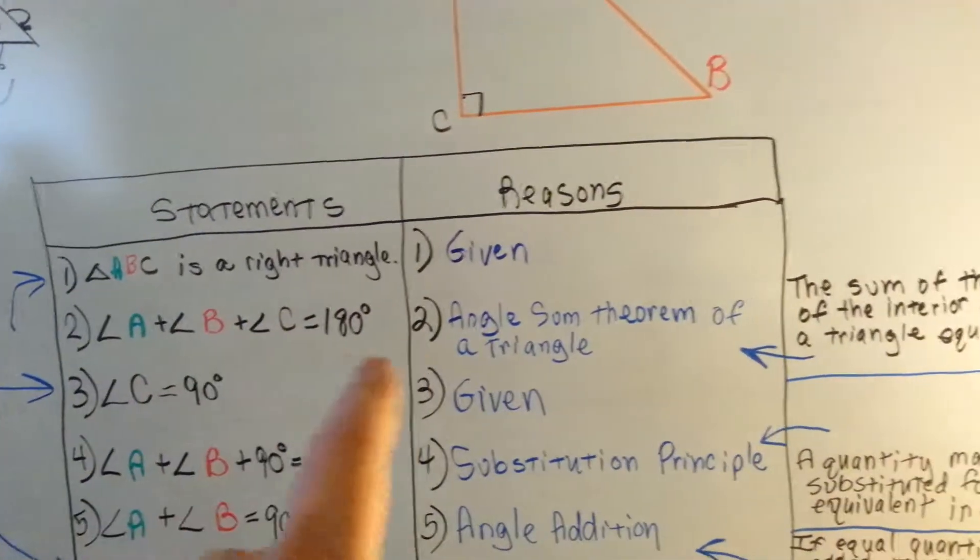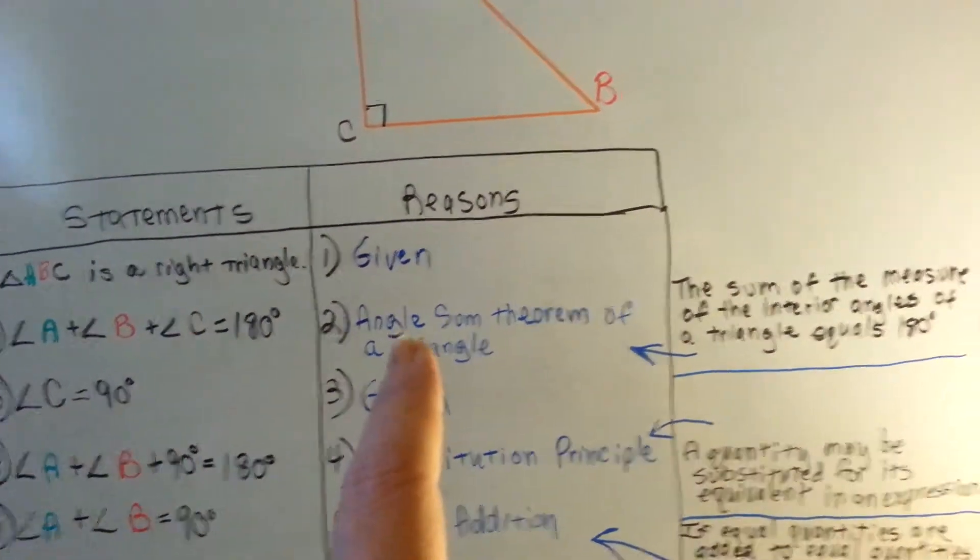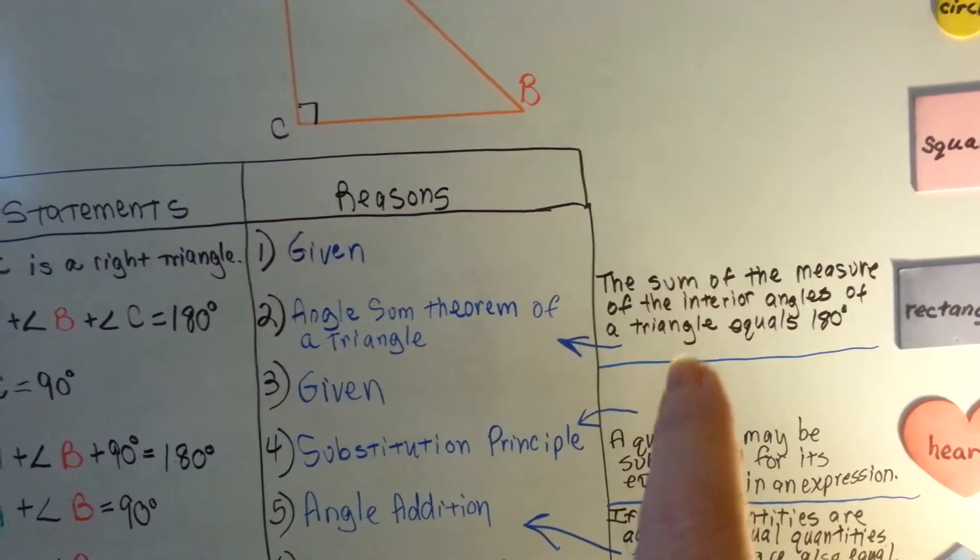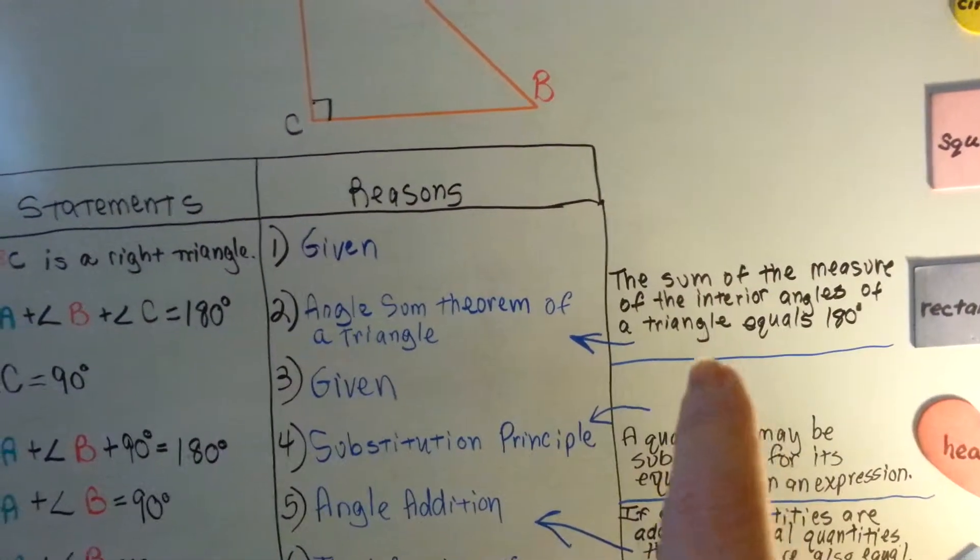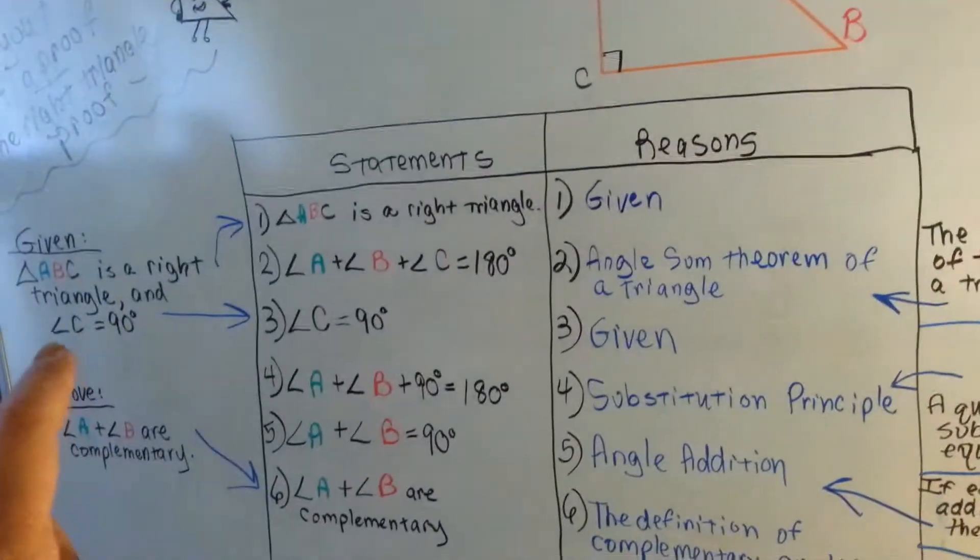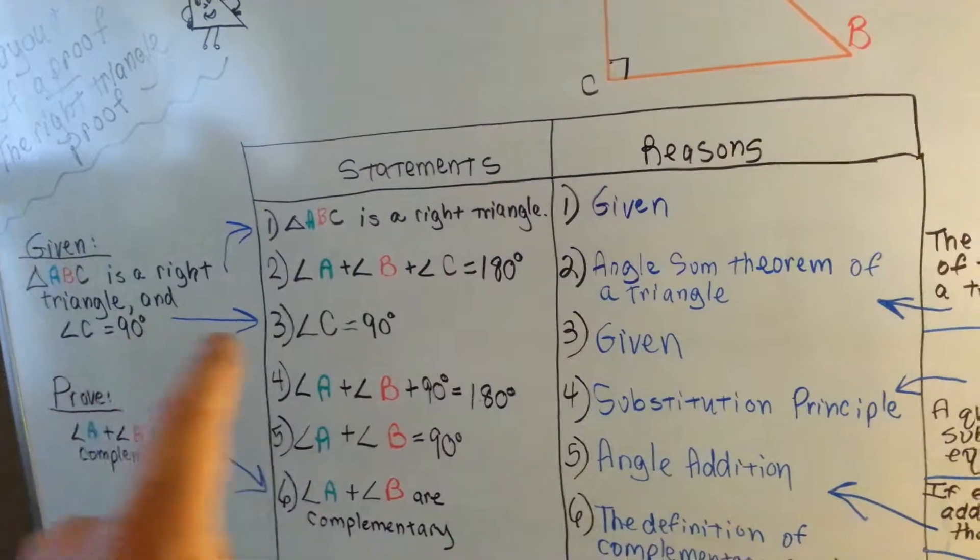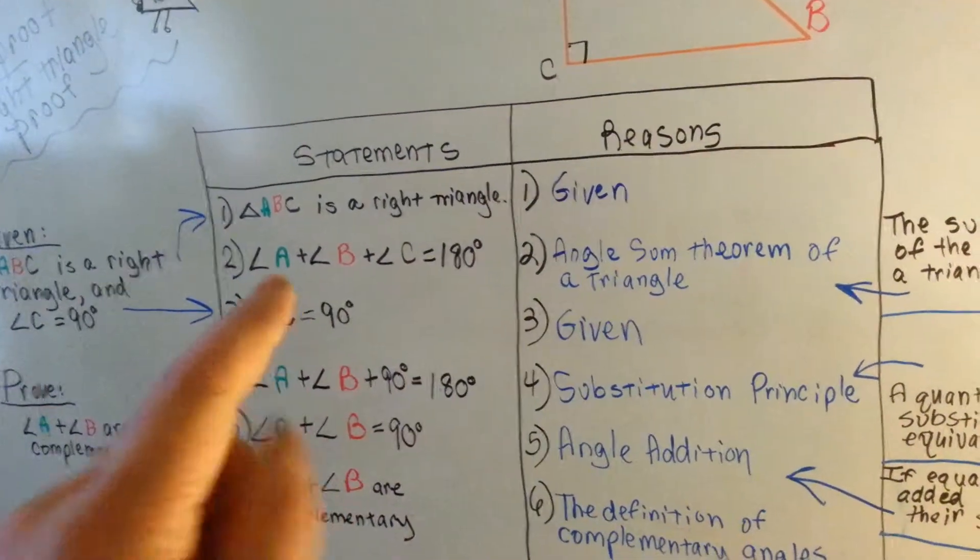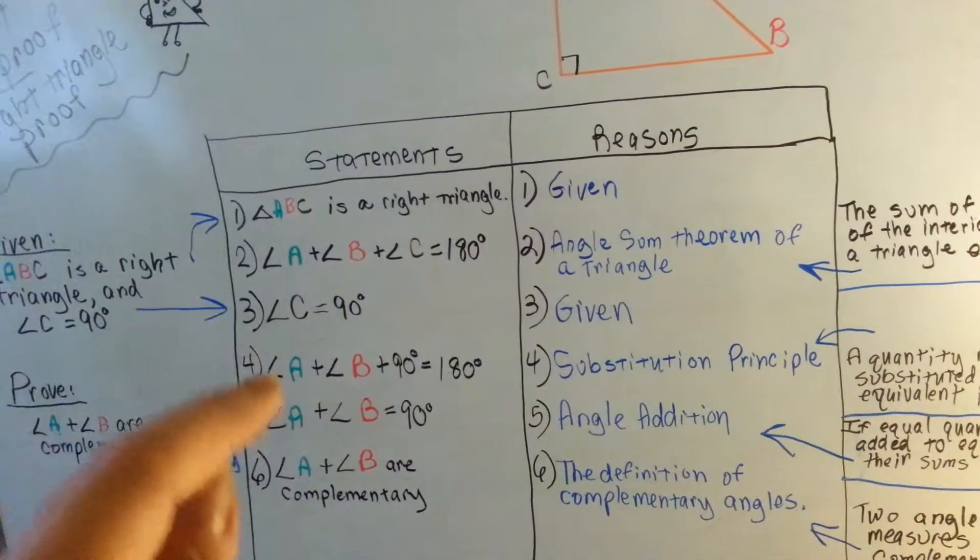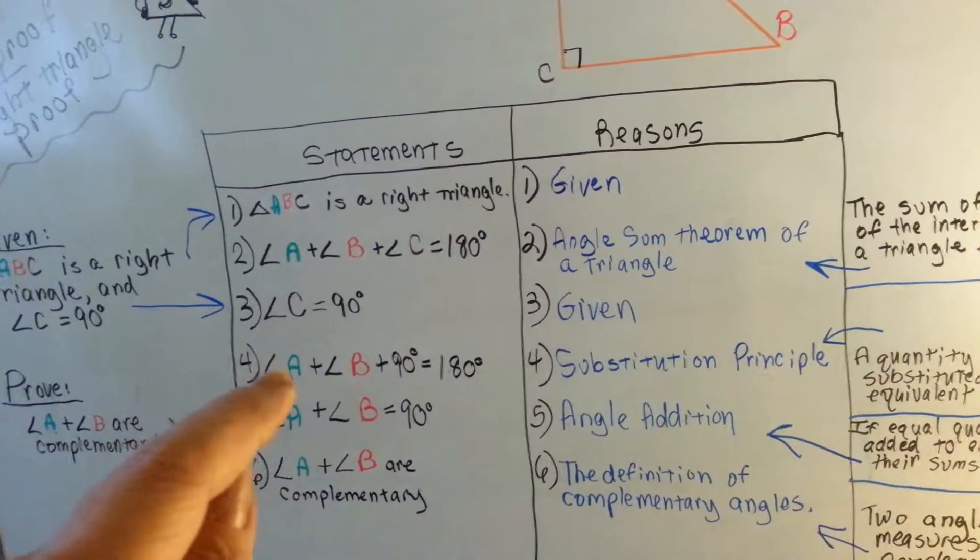Our reasoning for that is the angle sum theorem of a triangle. And that says the sum of the measure of the interior angles of a triangle equal 180 degrees. So we use that as our interim step before stating that angle C is 90 degrees, which is given. And our reasoning is if we say this and then this and then this, then this number 4 is going to make more sense. Okay?